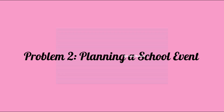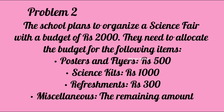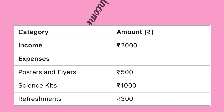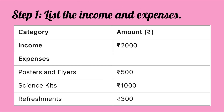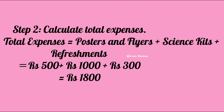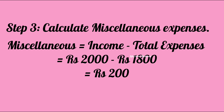Let's solve another problem. Let's create a budget table for the science fair and find out how much is allocated for miscellaneous expenses. Step one: list the income and expenses. Step two: calculate the total expenses, which equals posters and flyers plus costumes and refreshments. Step three: calculate the miscellaneous expenses, which equals income minus total expenses.